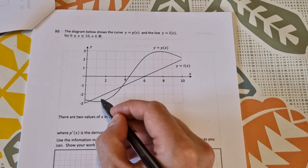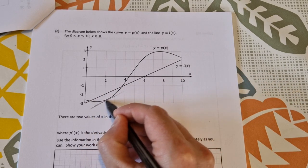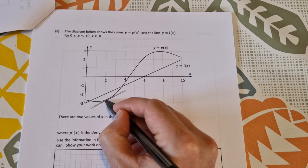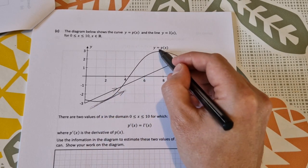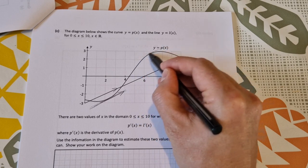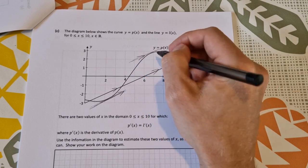There are two places that happens. We have it here, where the tangent is parallel, and up here as well, we have another one where the tangent is parallel. So the two points are here and here.